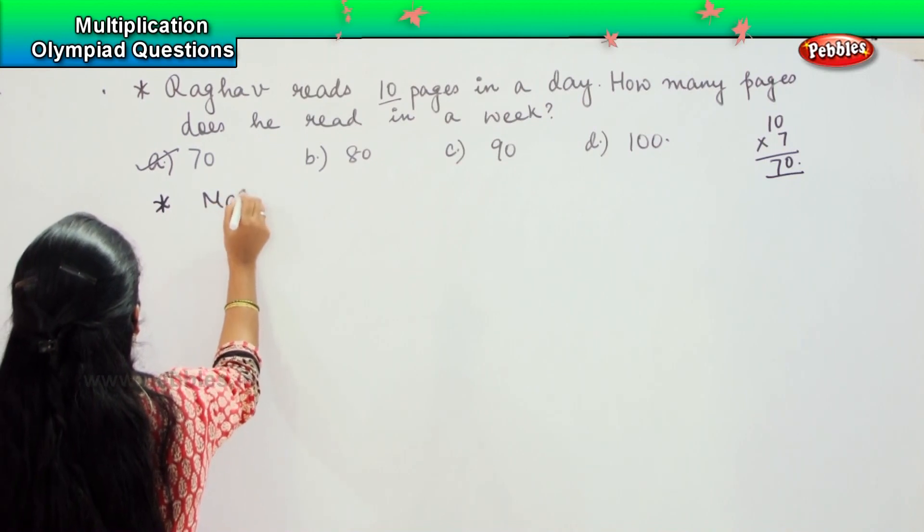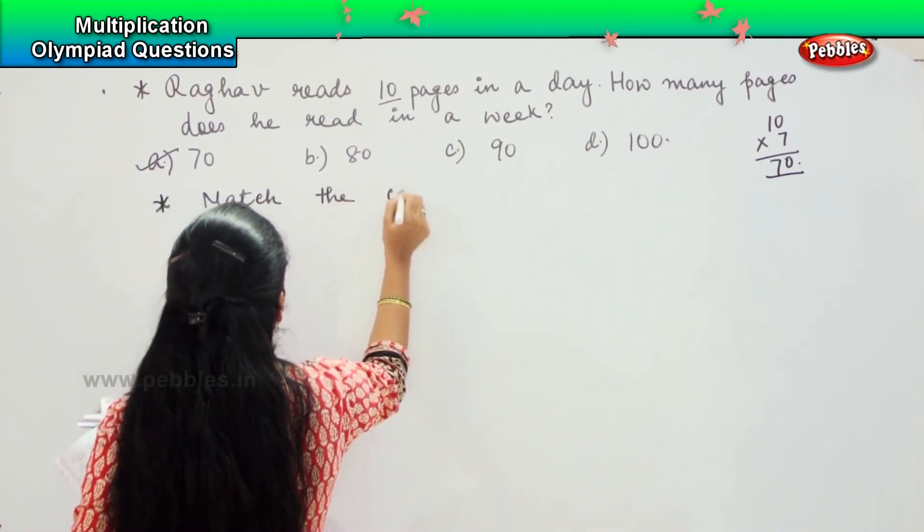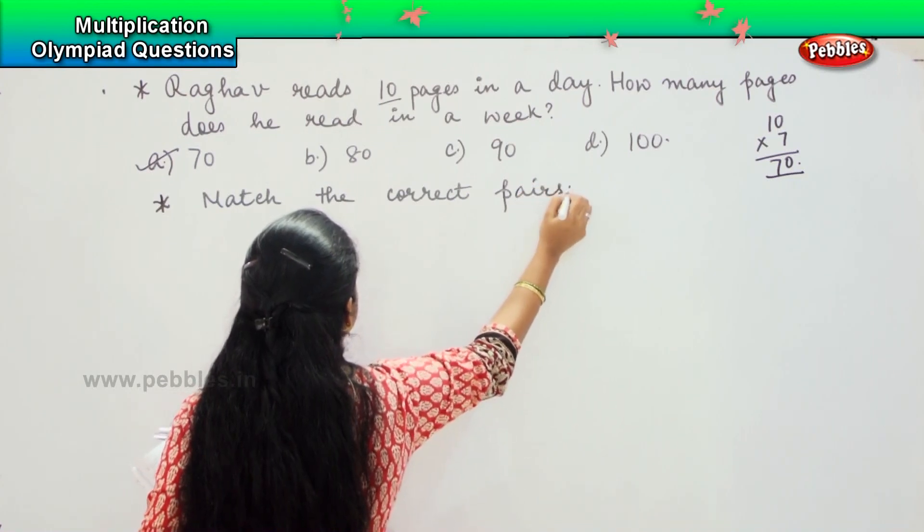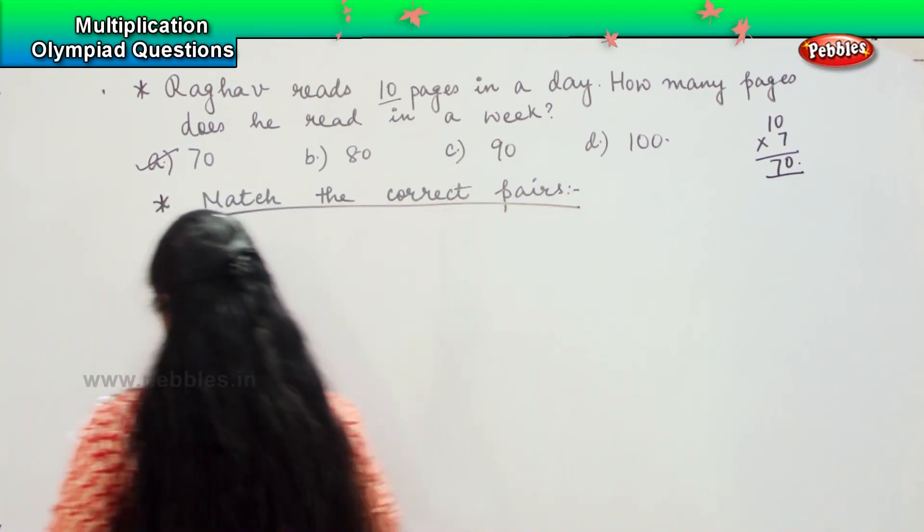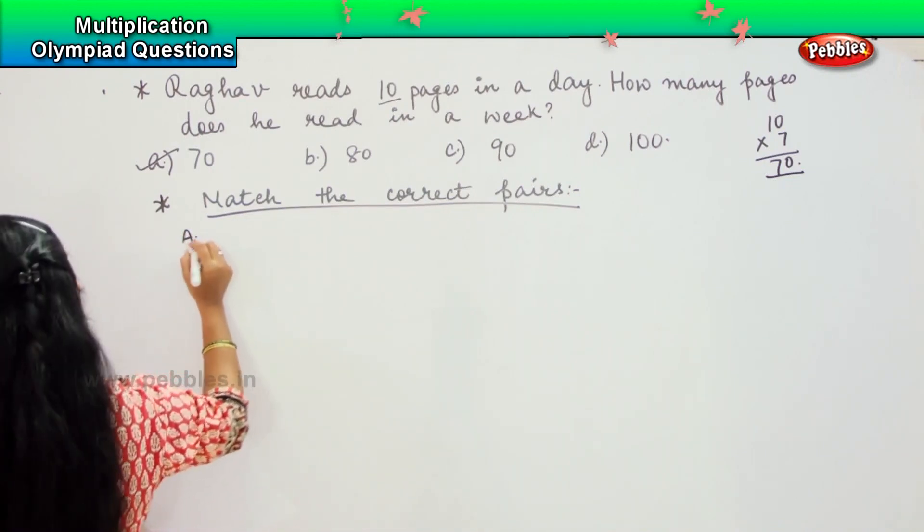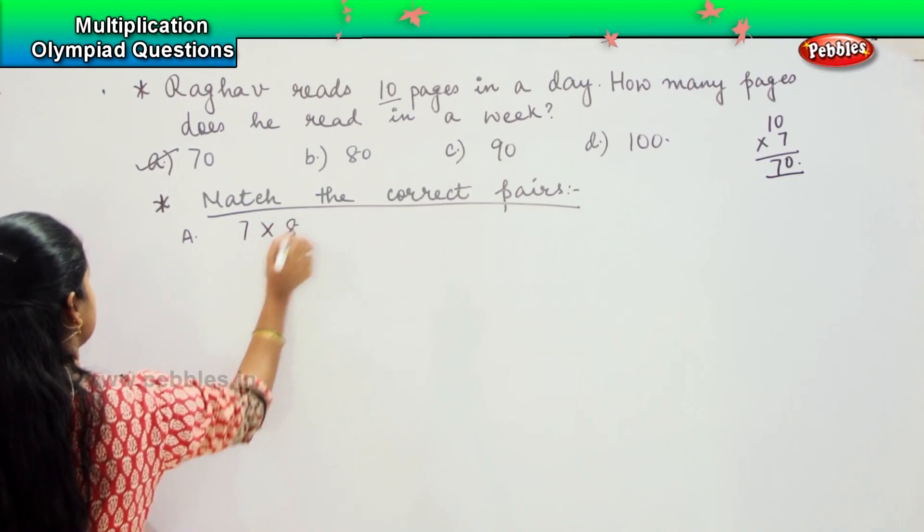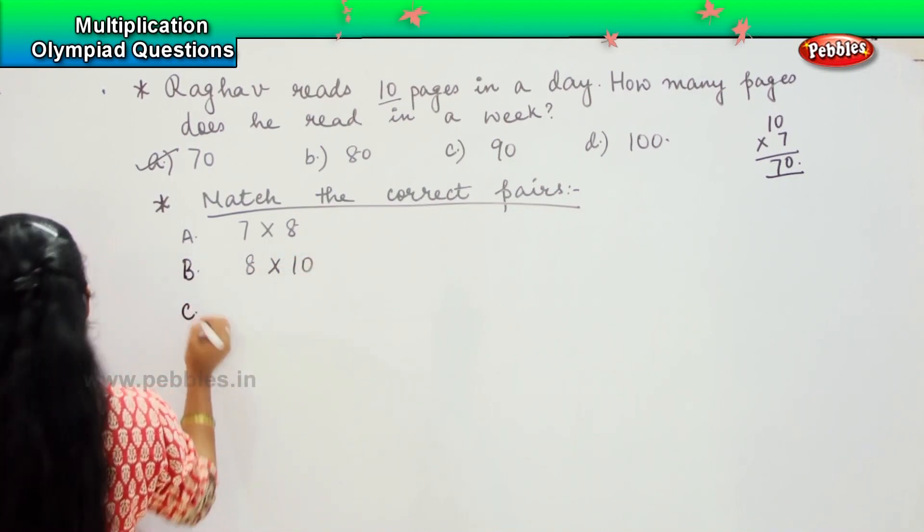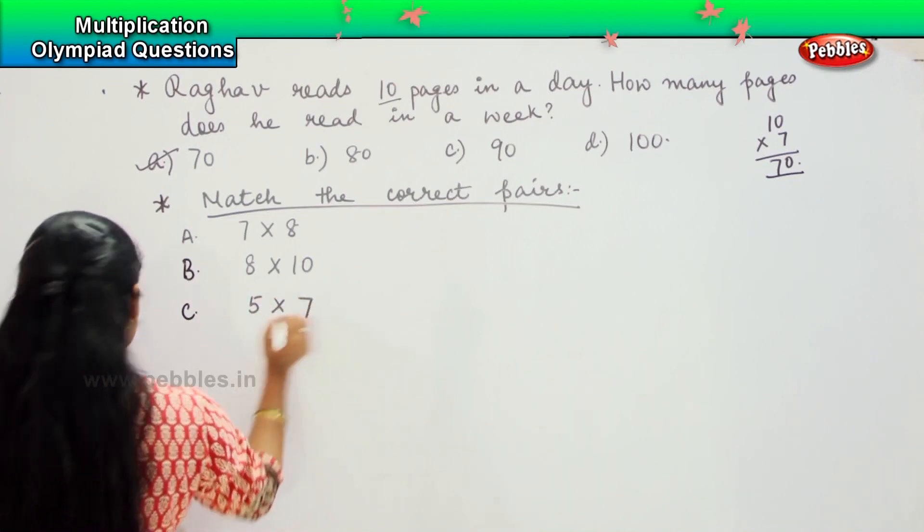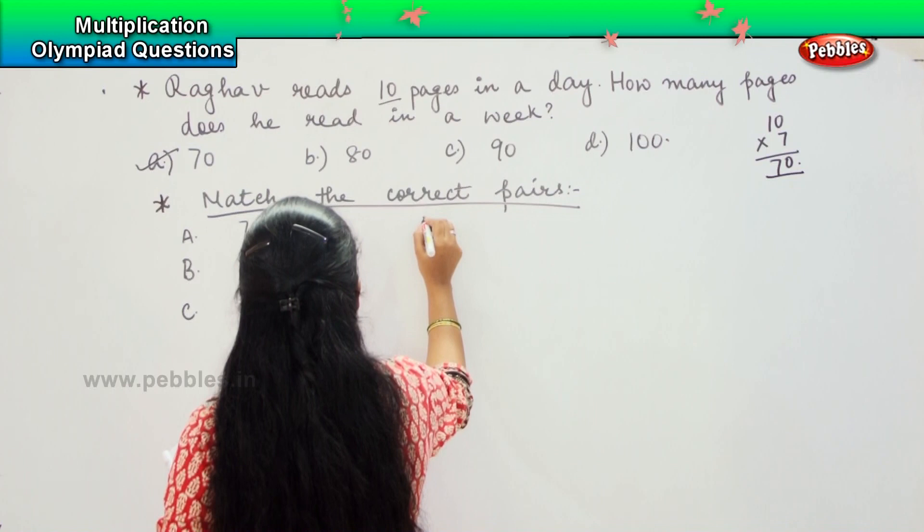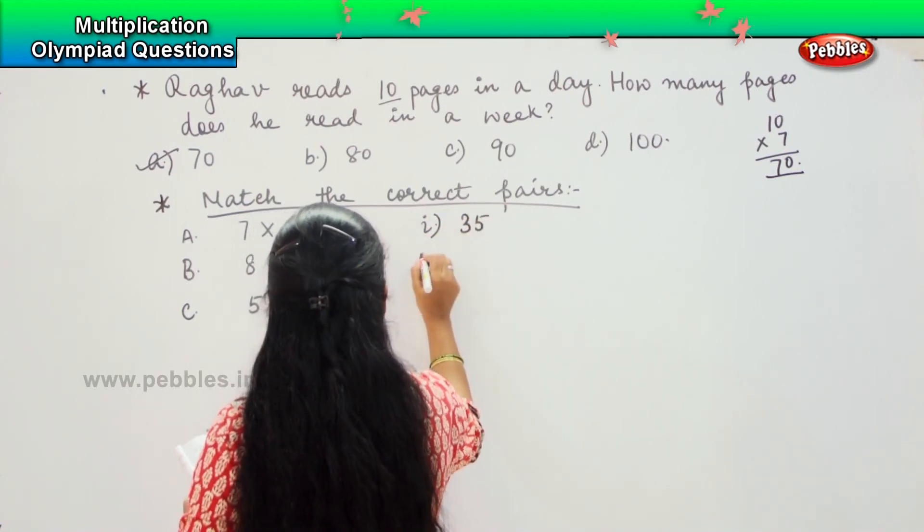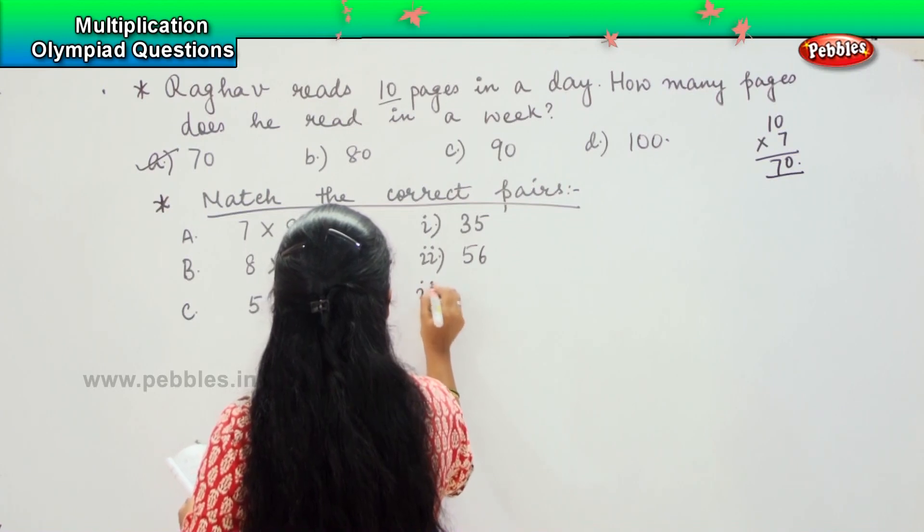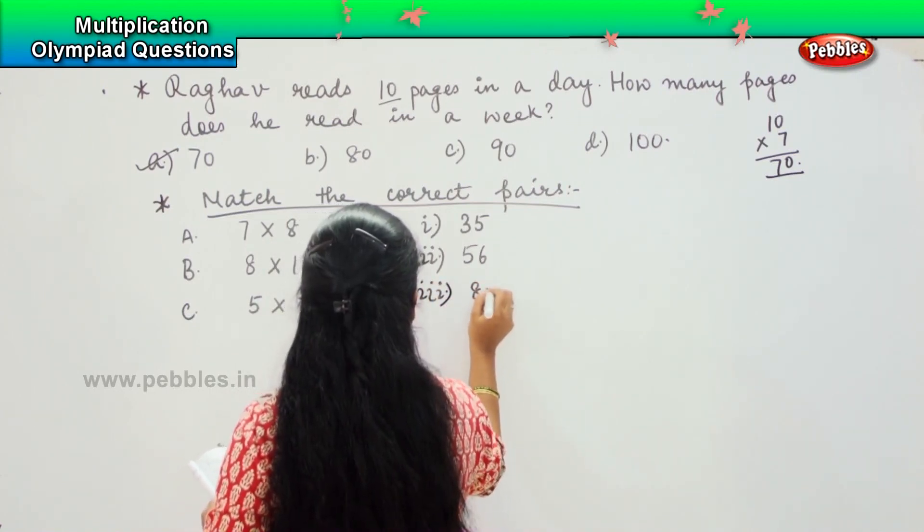Here, 7 into 8. The second one is 8 into 10. Third one is 5 into 7. And here, first one is 35, second one is 56, and the third one is 80.